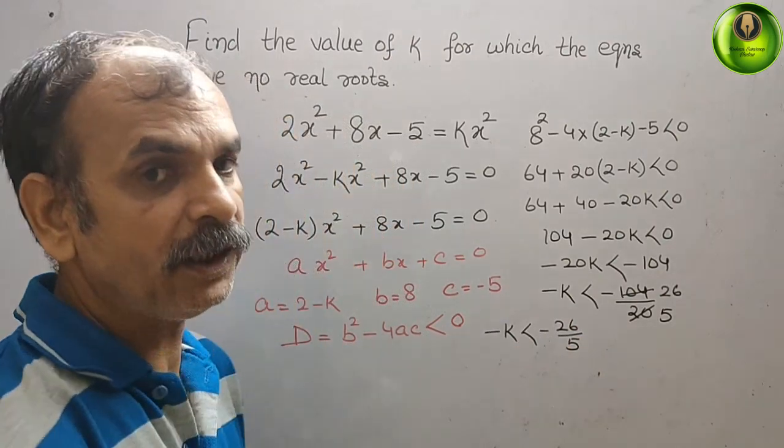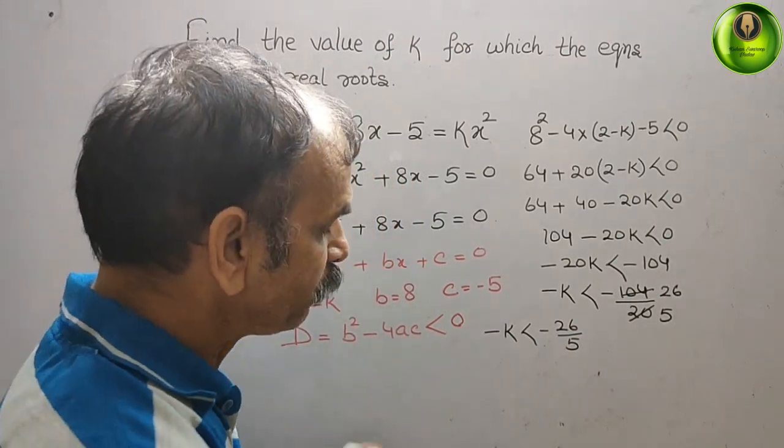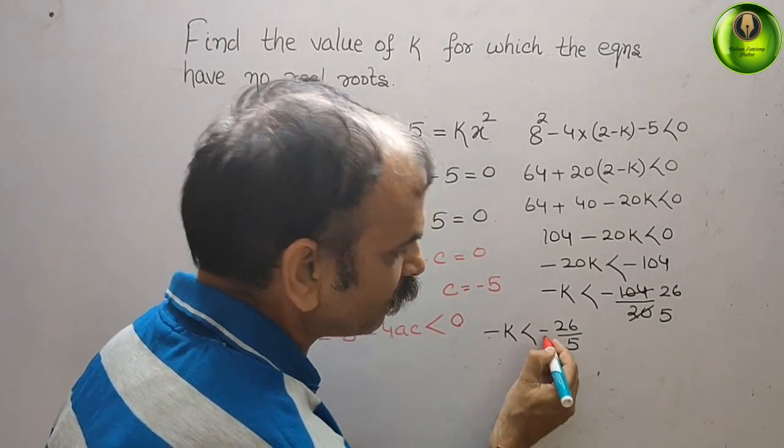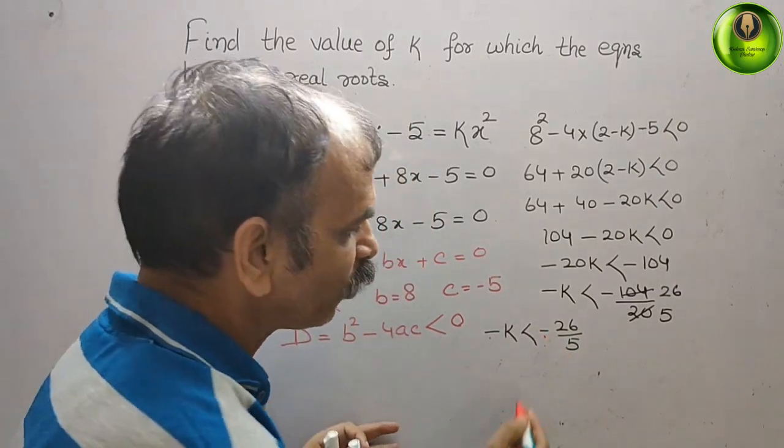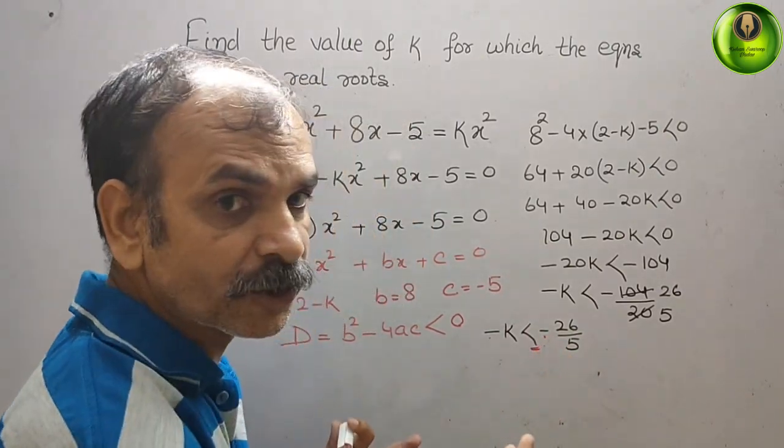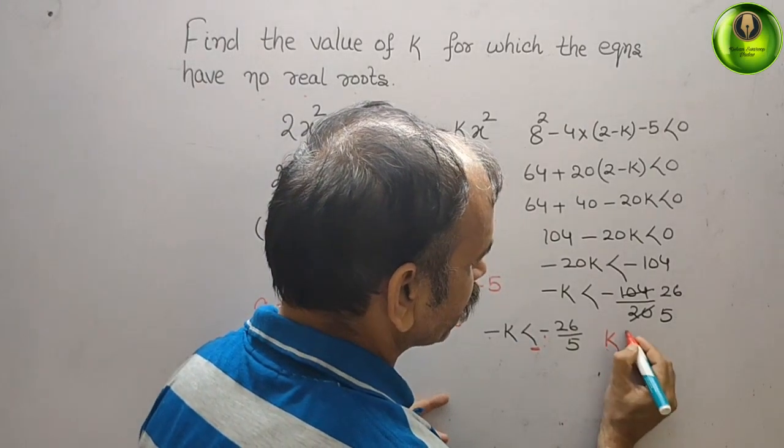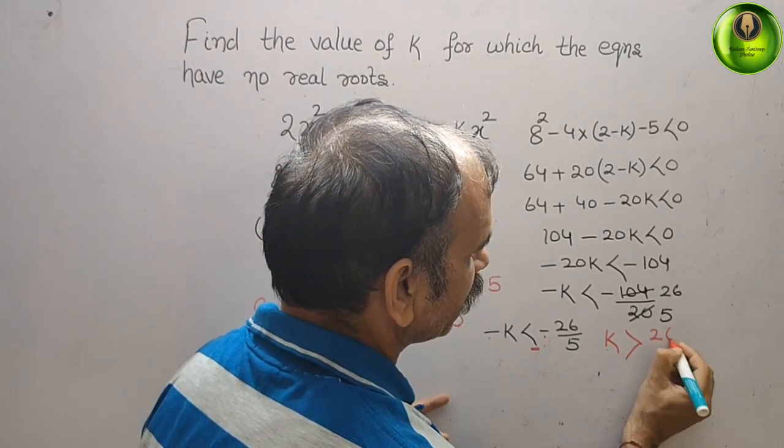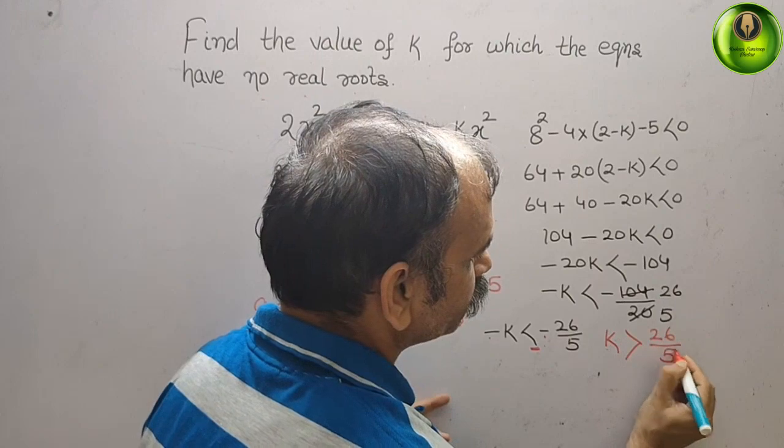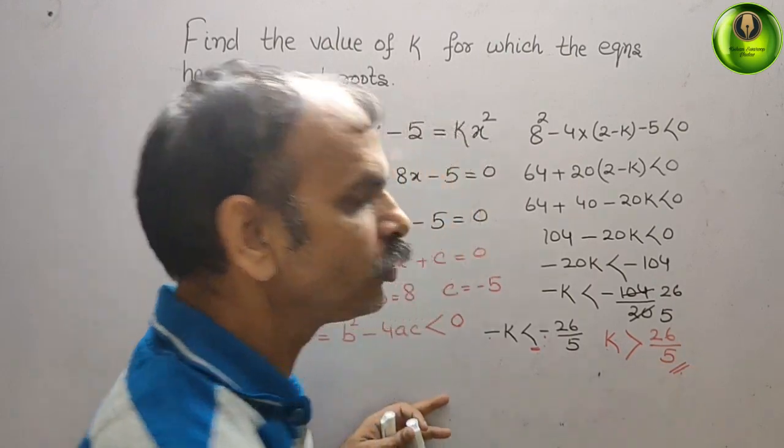Now if you see, this minus sign will change the sign of right side. Therefore, this sign will also get changed. Therefore, we can write k is greater than 26 by 5. This is your answer.